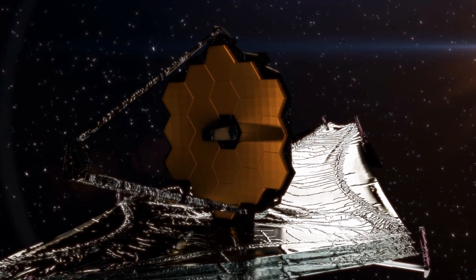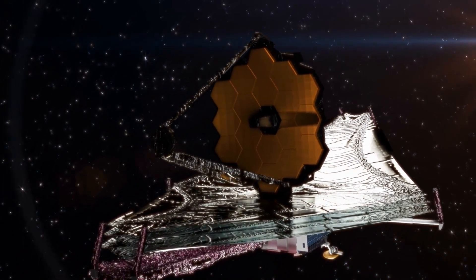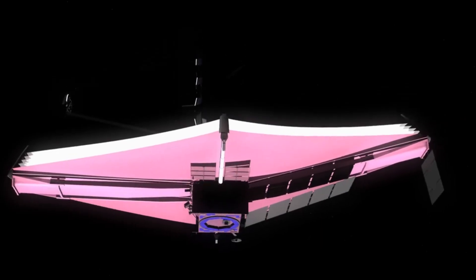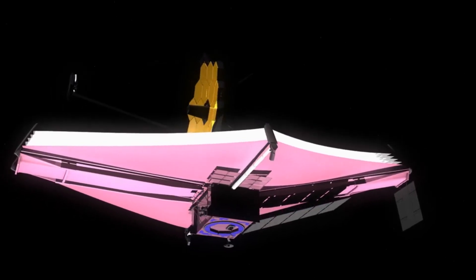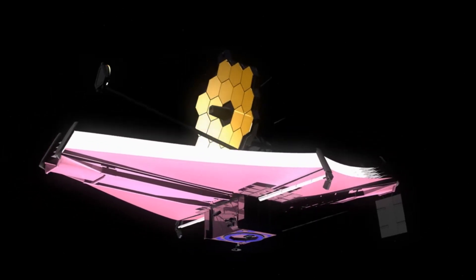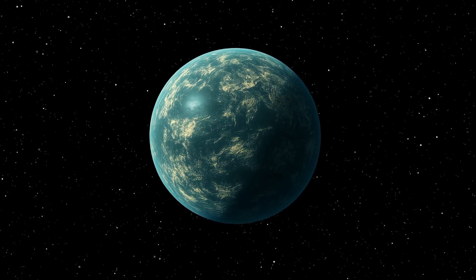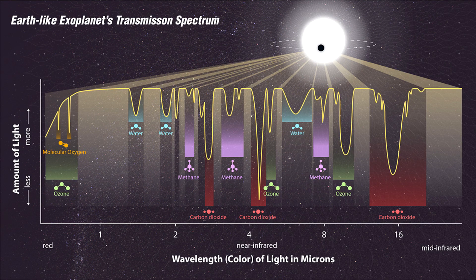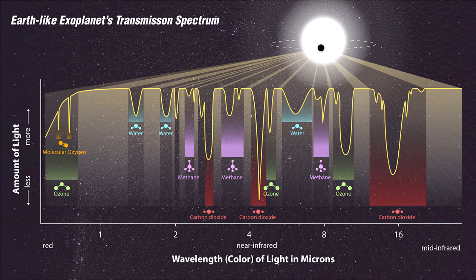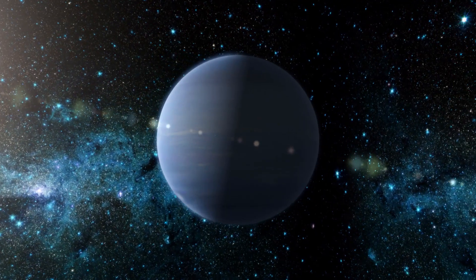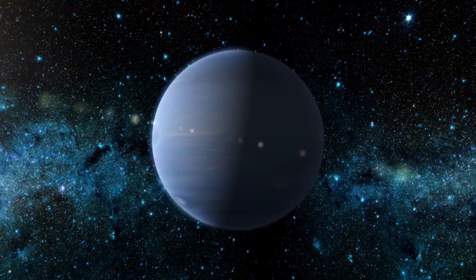And that's where the James Webb Space Telescope, or JWST, comes in. This remarkable telescope was designed, in part, to unlock the secrets hidden in alien skies. And with TOI 421b, it delivered. Scientists used transmission spectroscopy, a method that measures starlight filtering through a planet's atmosphere as it passes in front of its star. This technique allows us to detect the chemical makeup of those alien skies.